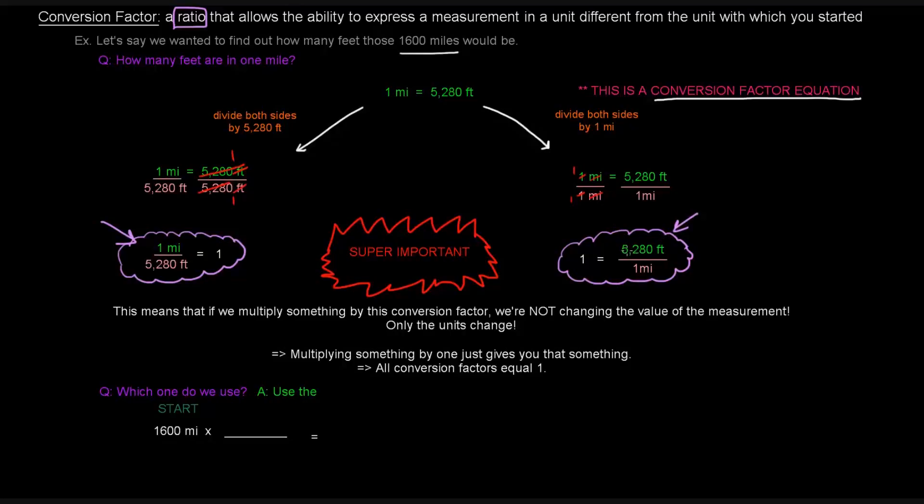We could take this ratio and multiply it by anything, and it wouldn't change the value of whatever we're multiplying it by. It would only change the measurement. This means that if we multiply something by this conversion factor, we're not changing the value of the measurement, only the units change. That's the whole purpose of these conversion factors. Multiplying something by one just gives you that something.